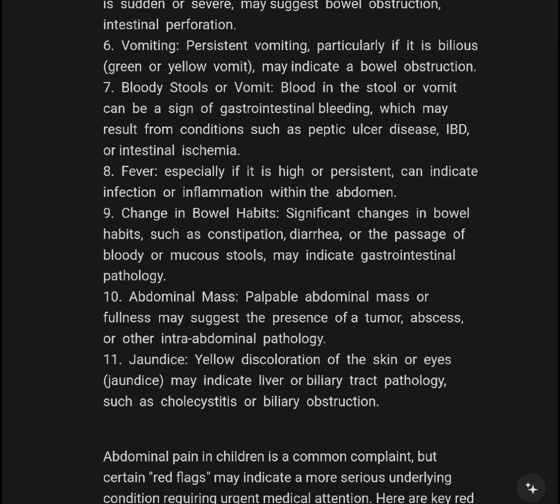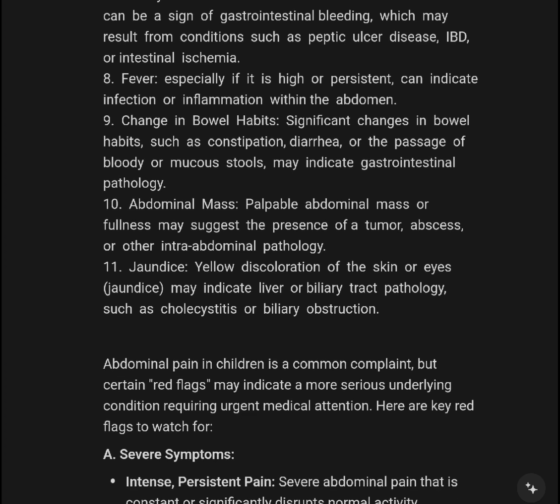Persistent vomiting, particularly if it is bilious — green or yellow — may indicate a bowel obstruction. Blood in the stool or vomit can be a sign of gastrointestinal bleeding, which may result from conditions such as peptic ulcer disease or intestinal ischemia.